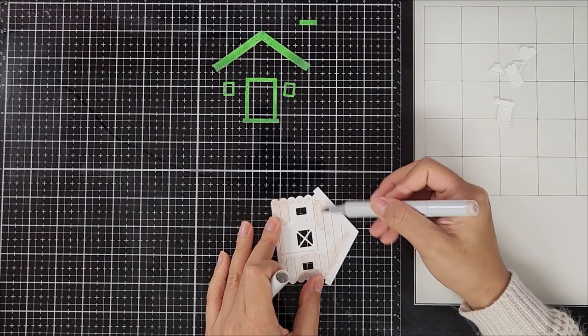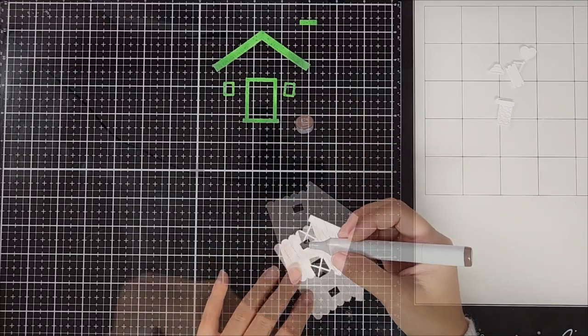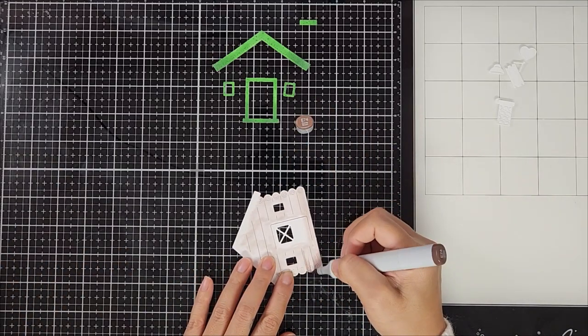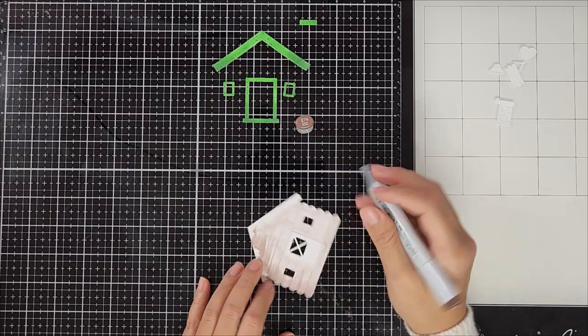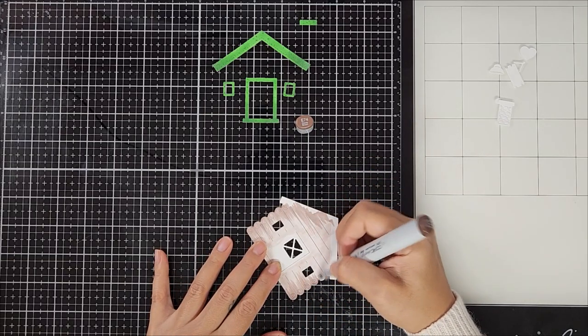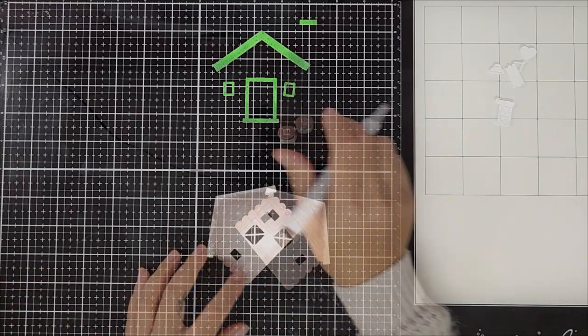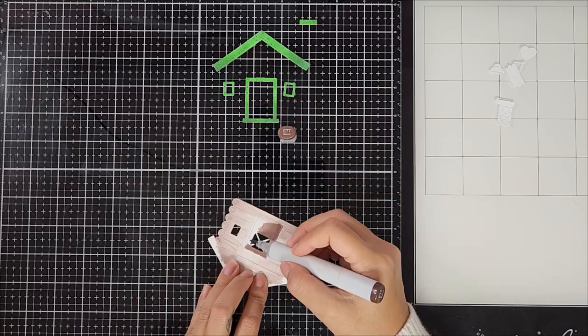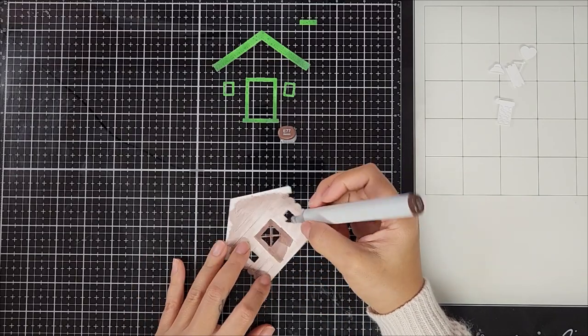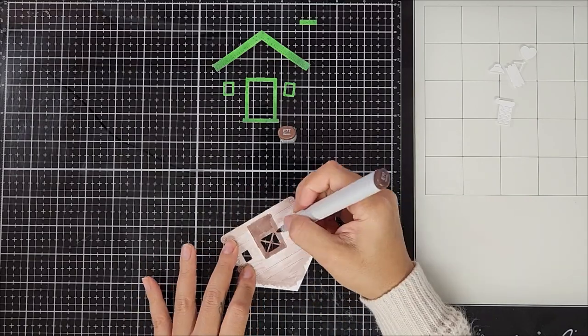So after I colored in all of the accessory green, I went in with a lighter shade of brown and colored the cabin itself. I did the same technique as I did with the beavers, so I went in with the lighter shade first, then going in with the darkest shade to create shadows, and then the mid-tone to blend everything out, and then going back with the lighter shade to blend it all in.